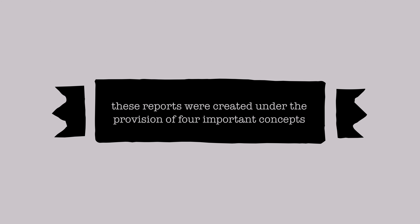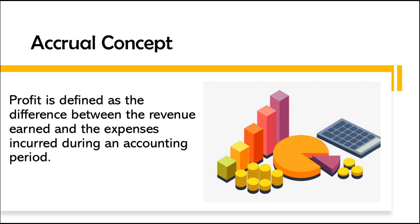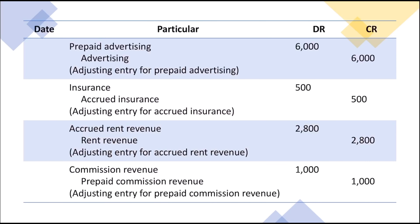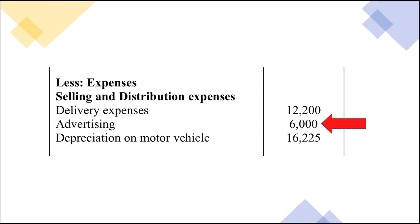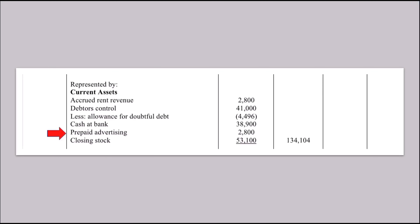These financial reports were created with four important concepts. Firstly, the accrual concept defines profit as the difference between the revenue earned and the expenses incurred. This is seen when we make adjustments for accruals and prepayments. Since the advertising expense was only $6,000, this was rightfully recorded in the income statement.